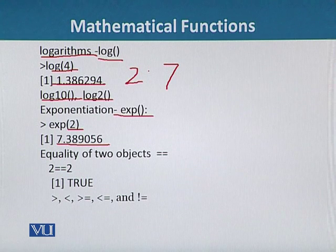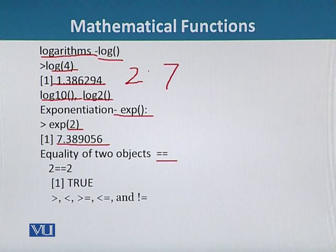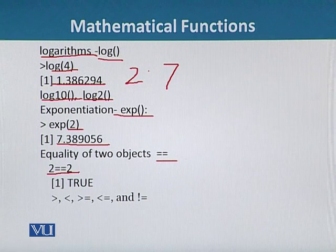Similarly, we can test the equality of two objects. That can be done by using the operator two equal signs and the result is a logical expression, either true or false. For example, 2==2, and this is true, so we will get the answer TRUE.